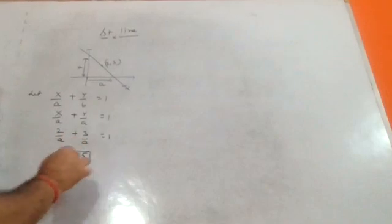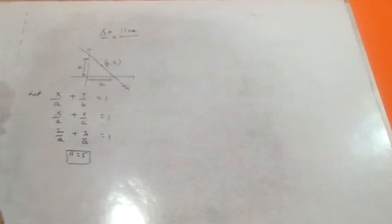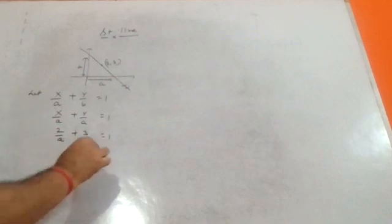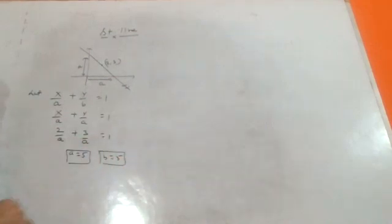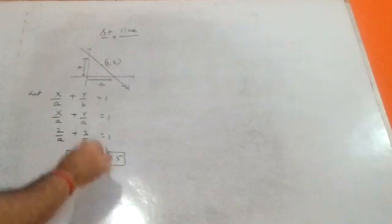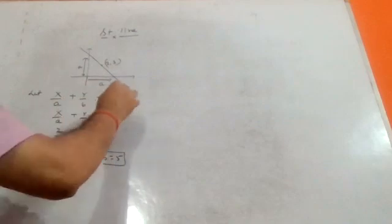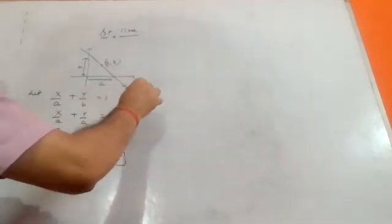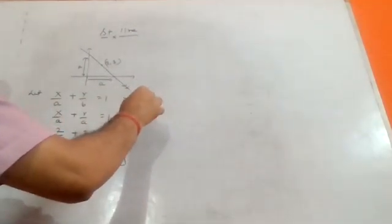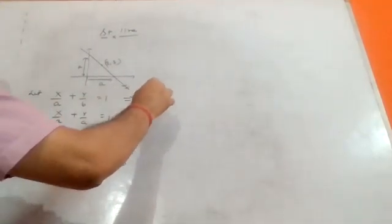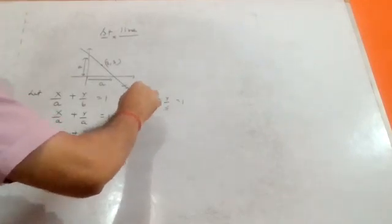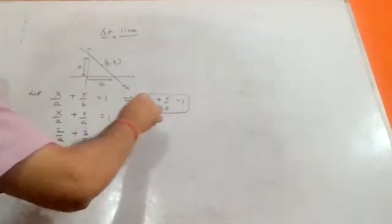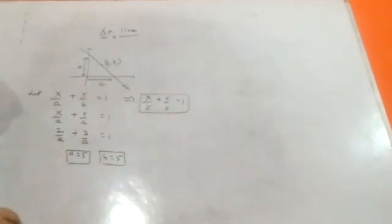Substituting, we find a is equal to five. Since both intercepts are equal, b is also equal to five. So a equals five is the required value.